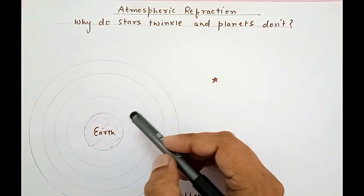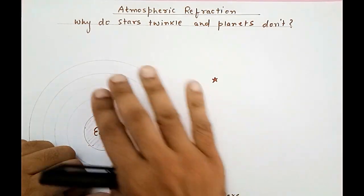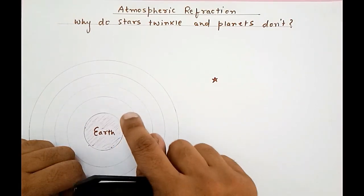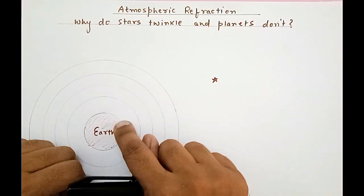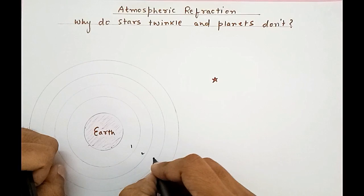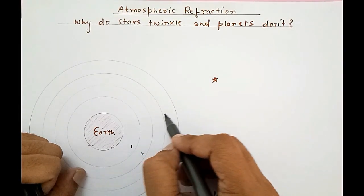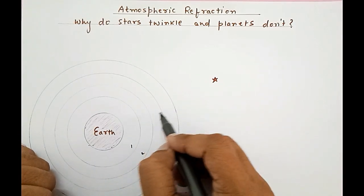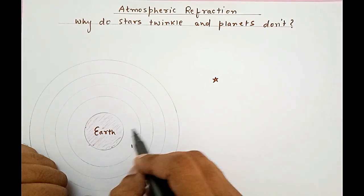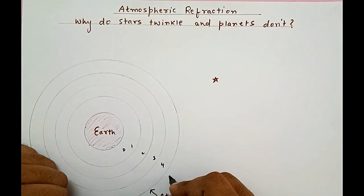Here we have the earth and these are the different layers of the atmosphere. The atmosphere is basically the layer of gases around the earth, and the layers of gases have different density. Let's call them layer number one, two, three, and four. As we go away from the surface of the earth, the density of the air decreases — both material density and optical density. So this would be the densest medium and here we know it is vacuum.